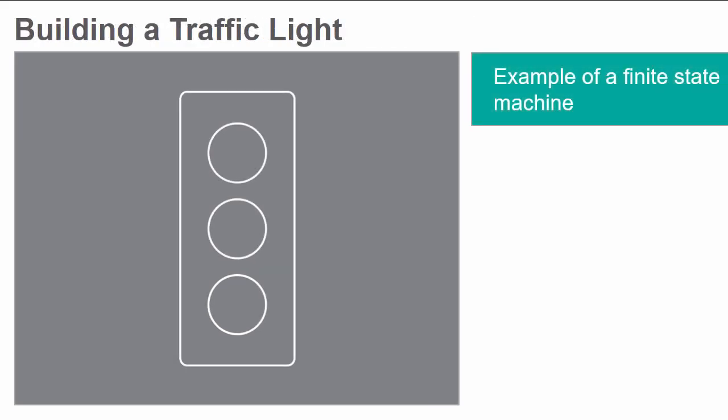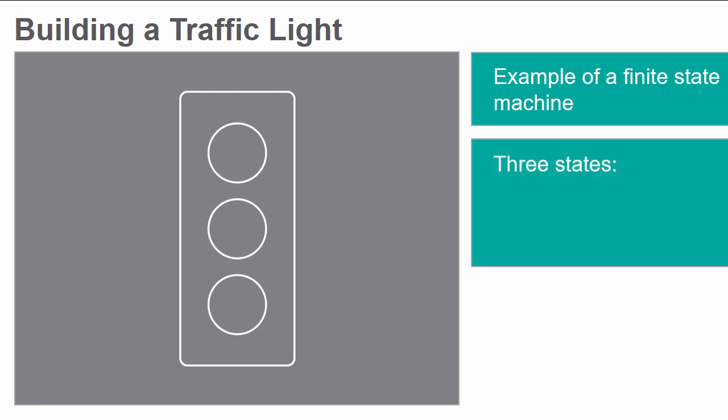A practical example of a finite state machine is a traffic light signal. The three possible states for this machine are red, yellow, and green.